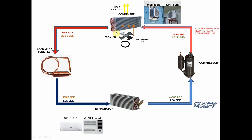After that process, the condenser discharges our refrigerant as high pressure, high temperature, warm liquid refrigerant, which is then supplied to the capillary tube. As it passes through the capillary tube, the pressure and temperature of our refrigerant change — from high pressure to low pressure, as well as the temperature. So it is supplied to the evaporator as low pressure, low temperature, cold liquid refrigerant.